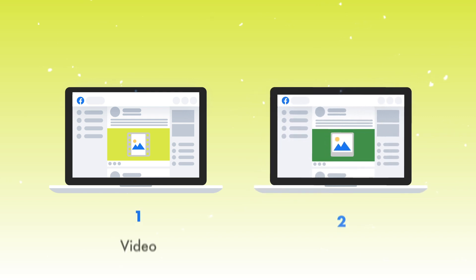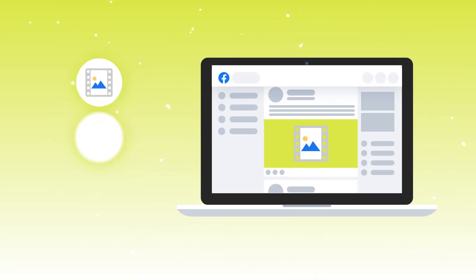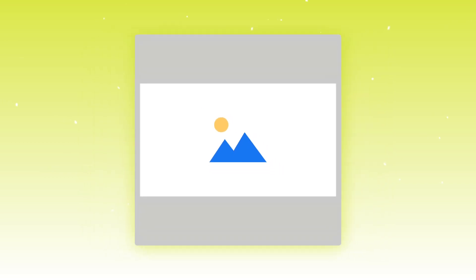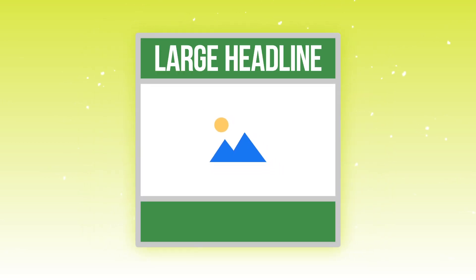There are two main types of ad creative. The first is video, which is one of my favorites. Video could be a regular video, a boomerang, or an animated GIF. For regular video, educational videos are the very best to use for audience building. It's ideal to have a horizontal video with a square canvas, colored background, large headline, and subtitles below the video.